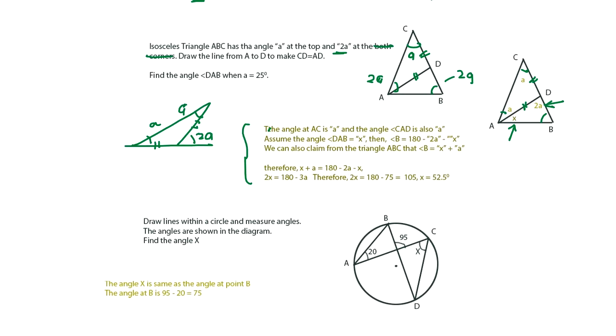So 2A minus X. B is 180 minus 2A minus X. You can also claim from the triangle ABC, ABC, angle B is X minus A. Therefore you have two equations and solved X. So this 2A, it doesn't mean that's 2A I think. Top is A. That's the only thing that's given.